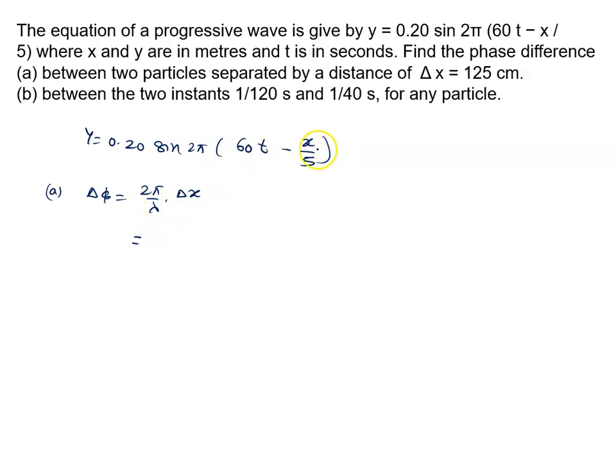If we write the instant equation y equals a sin omega t minus kx, better we use k because k equals 2 pi by lambda times delta x. What is the value of k? k is 2 pi upon 5.